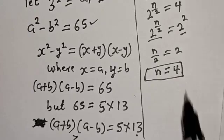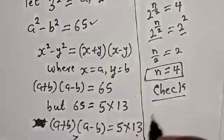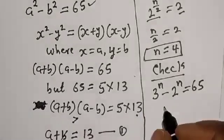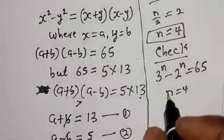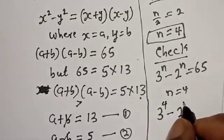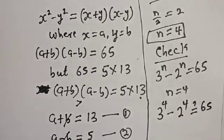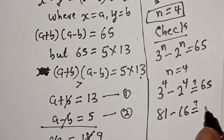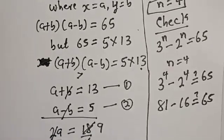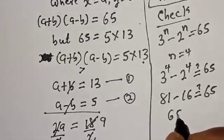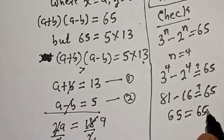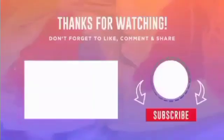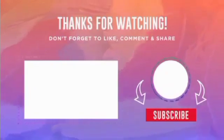Let's verify: the given equation is 3 raised to power n minus 2 raised to power n equals 65. With n equal to 4, we get 3 to the power 4 minus 2 to the power 4, which is 81 minus 16, equal to 65. This satisfies the equation, so n equals 4 is correct. If you enjoyed the class, please don't forget to like, share, comment and subscribe. Thank you.